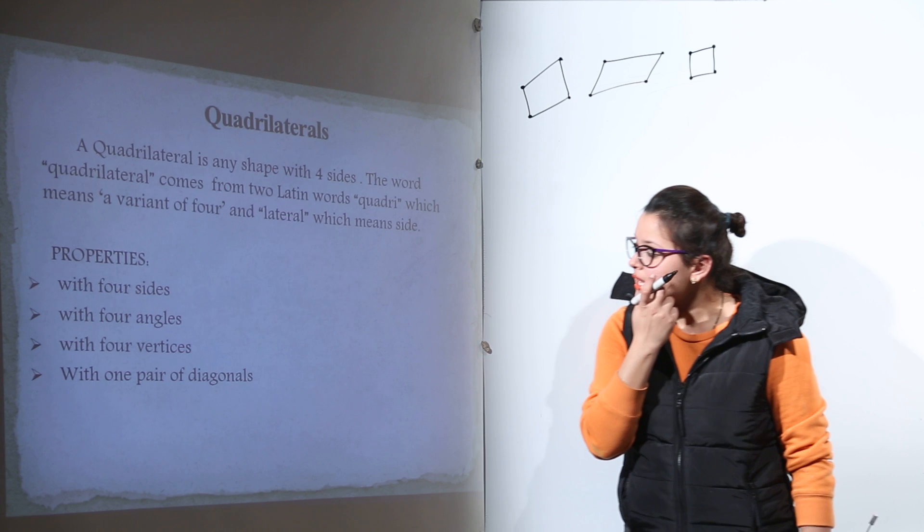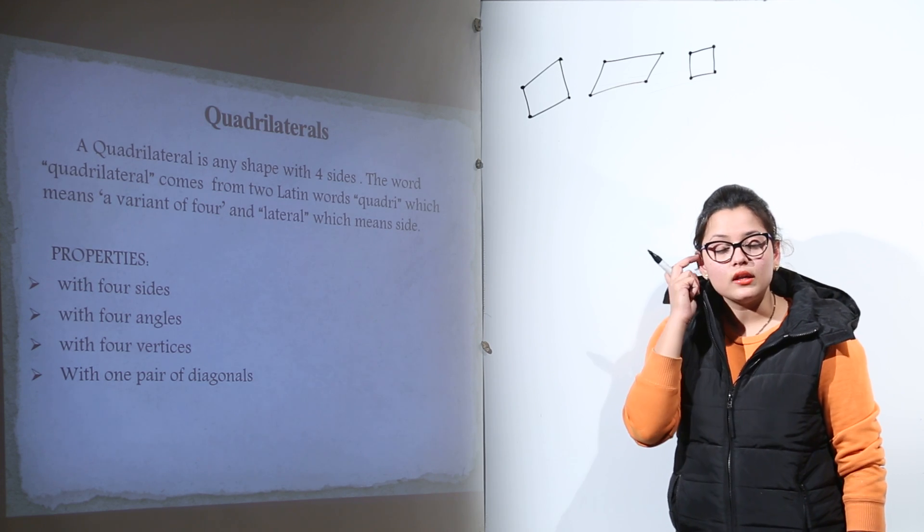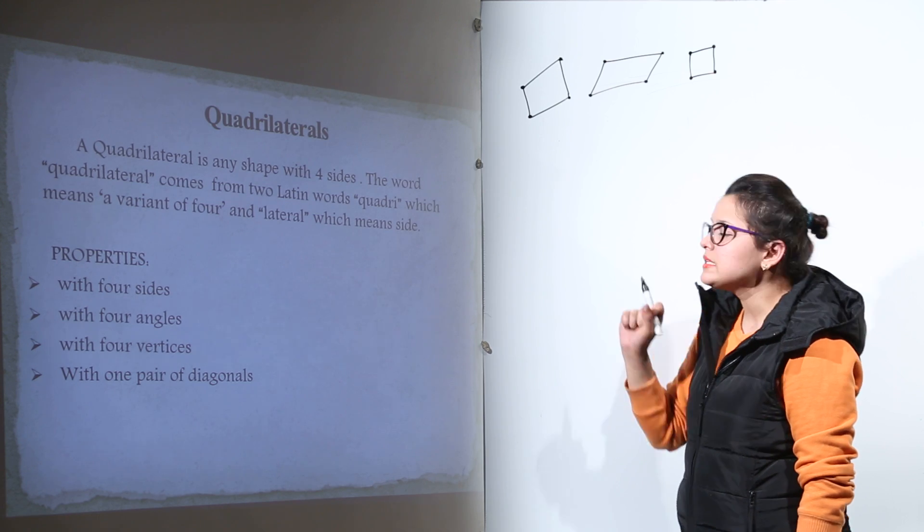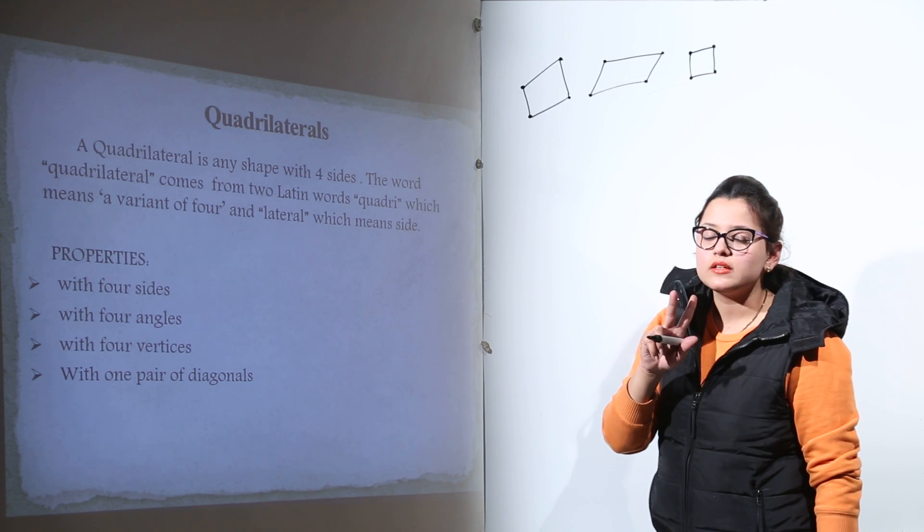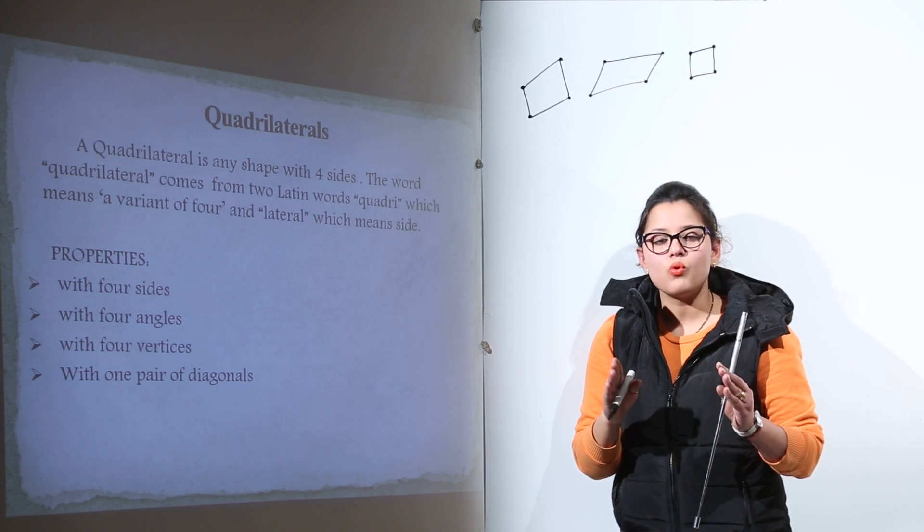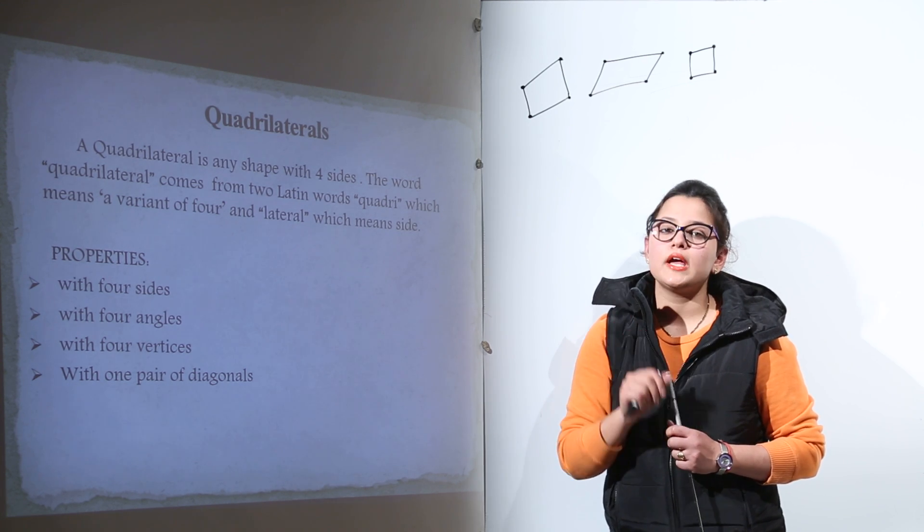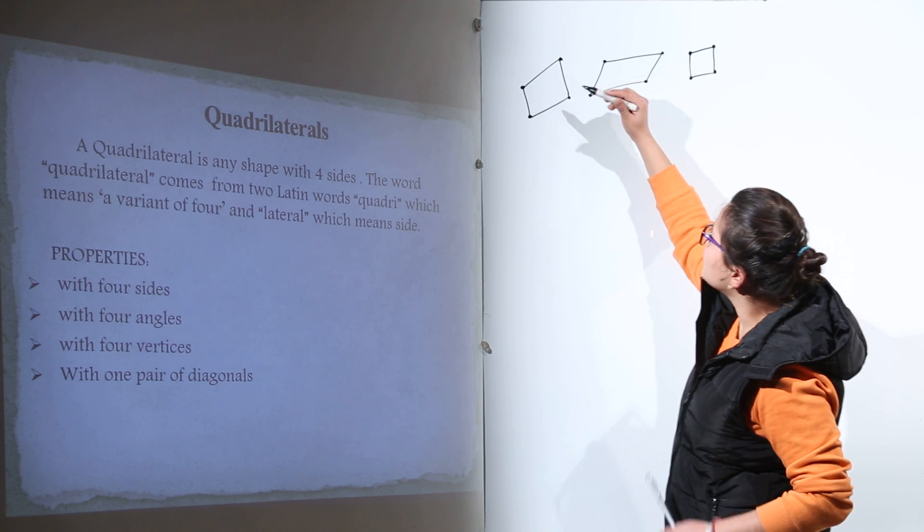The last property is that it has one pair of diagonals. What does one pair of diagonals mean? One pair means we have two diagonals. A pair represents quantity 2, so every quadrilateral has two diagonals. Let us check for each one.